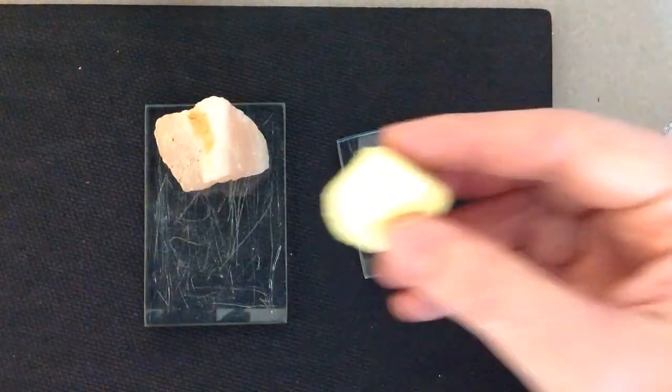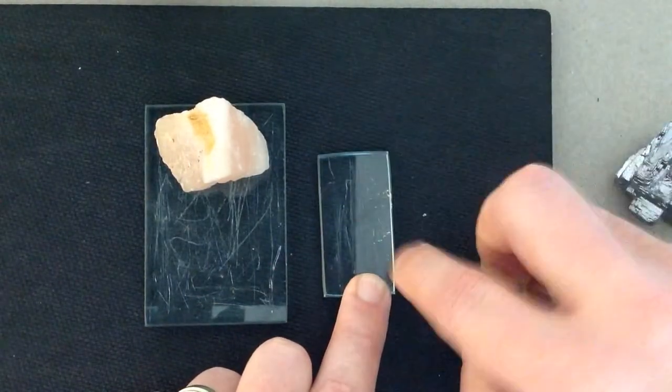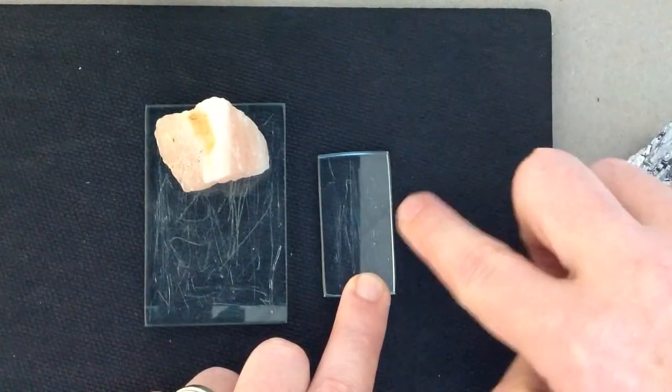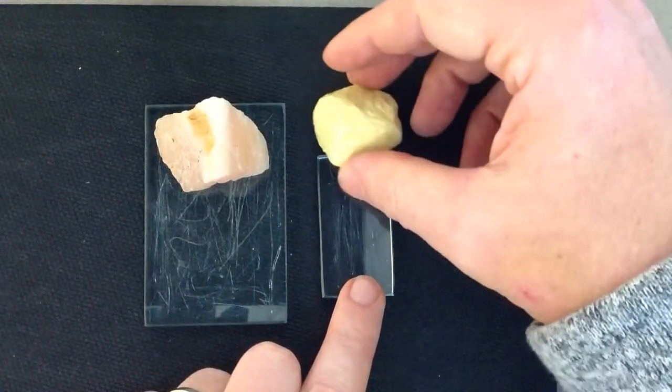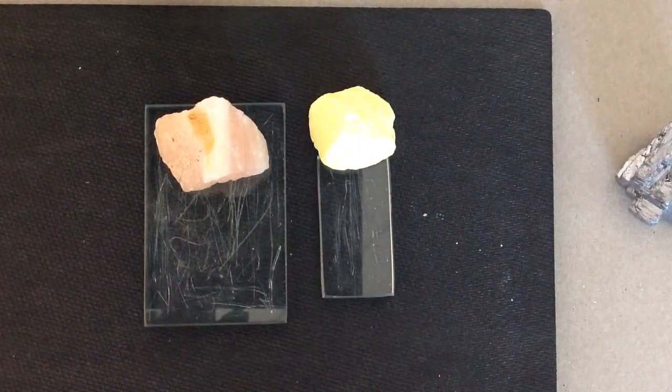If I take a mineral like sulfur, sulfur is incredibly soft. Sulfur may break off on the glass, but it will not scratch it. Sulfur is softer than 5.5. So hardness is going to all be about scratching of glass.